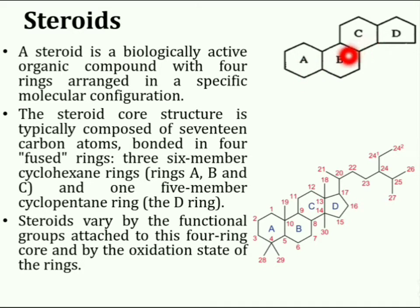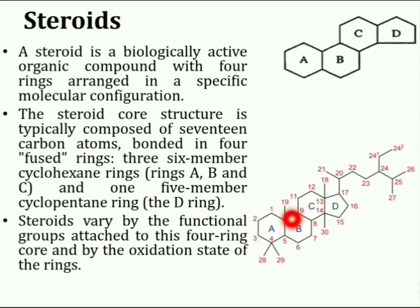Rings A, B, and C are six-membered cyclohexane rings, while the D-ring is a five-membered cyclopentane ring. Steroids vary by the functional groups attached to this four-ring core and by the oxidation state of the rings. Numbering starts from the first ring at this position, and then various positions are indicated as shown in this structure.